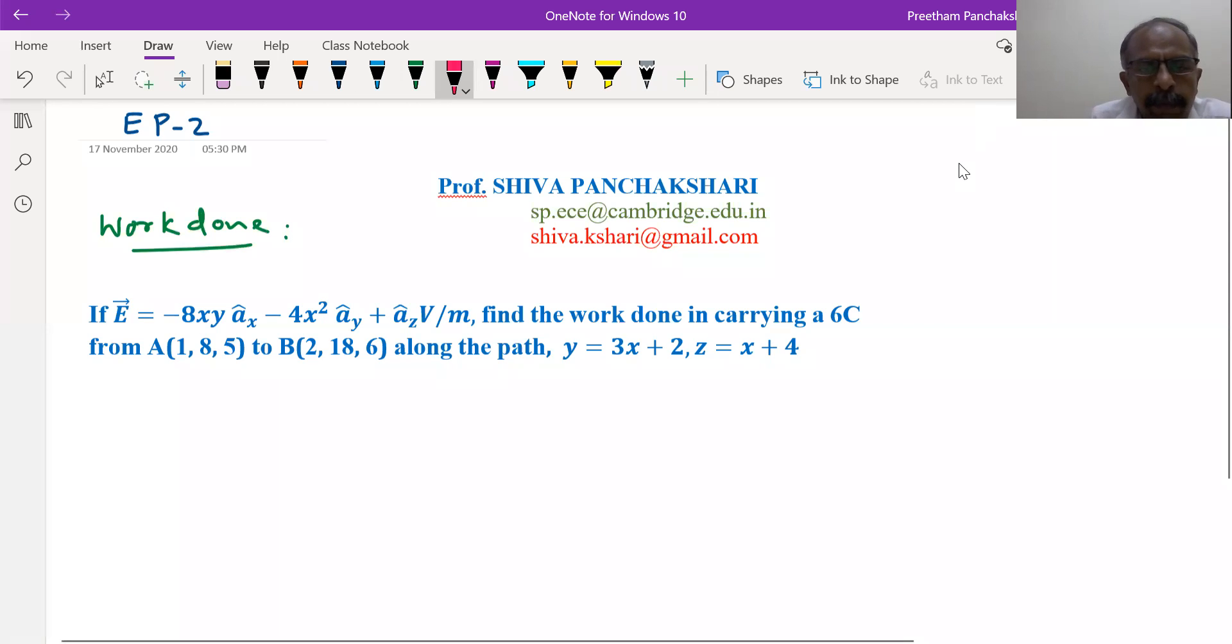In this problem we have to find the work done in carrying six Coulombs of charge from point A to point B in the given electric field along the given path.